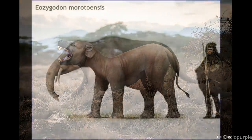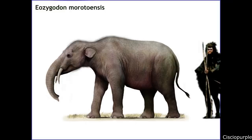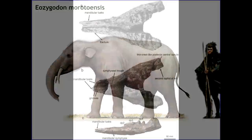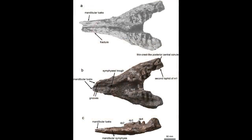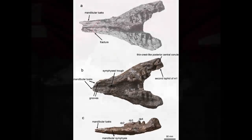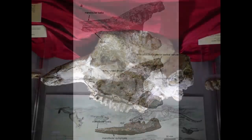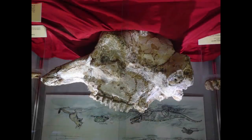A closely related genus found in slightly younger deposits was Eozigodon, an animal that lived during the early Miocene and was also found only in Kenya. It is known from partial skull material which includes short mandibular tusks on the lower jaw and Toblerone-shaped molar teeth. The tusks present in the upper jaw were also relatively short and downturned, with the overall size of Eozigodon being just slightly smaller than the earlier Lossodocodon.